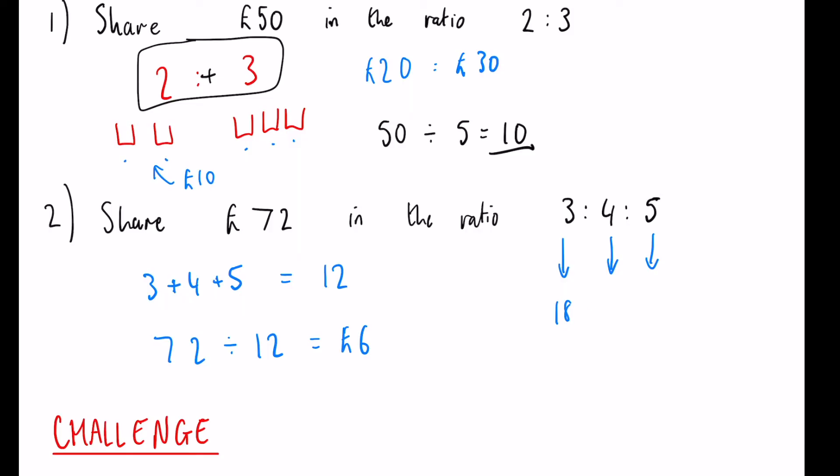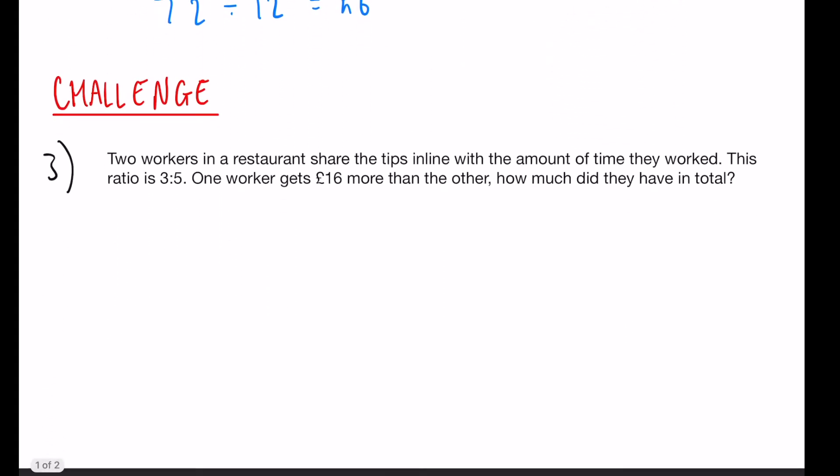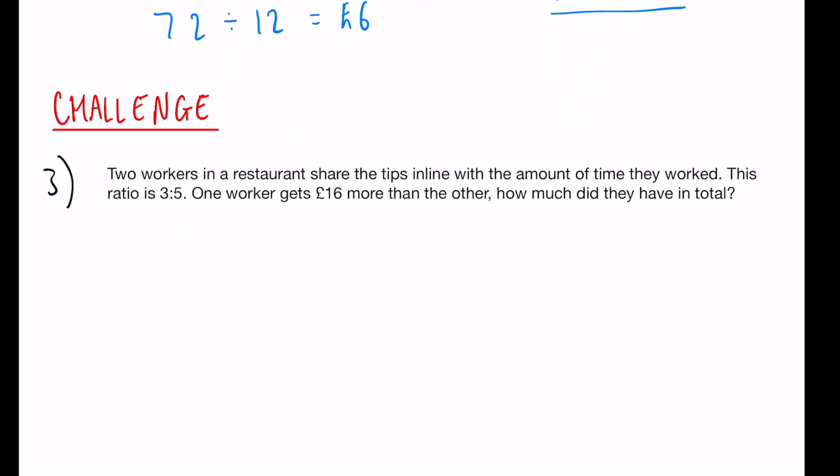Leaving us with 18:24:30, and that is your final answer. Now we have a challenge question. Two workers in a restaurant share the tips in line with the amount of time they've worked. This ratio is 3:5.